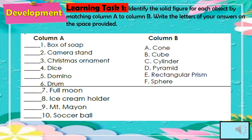For Learning Task 1, identify the solid figure for each object by matching column A to column B. Write the letter of your answer on the space provided. Column A has: box of soap, camera stand, Christmas ornament, dice, domino, drum, full moon, ice cream holder, Mount Mayon, and soccer ball. Column B has: A. cone, B. cube, C. cylinder, D. pyramid, E. rectangular prism, and F. sphere.